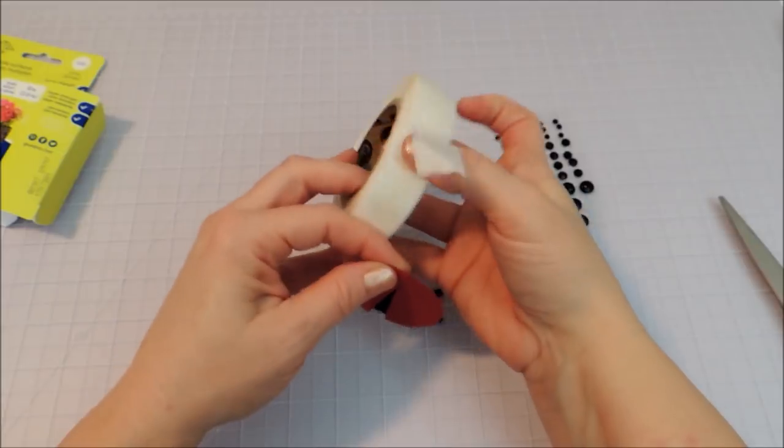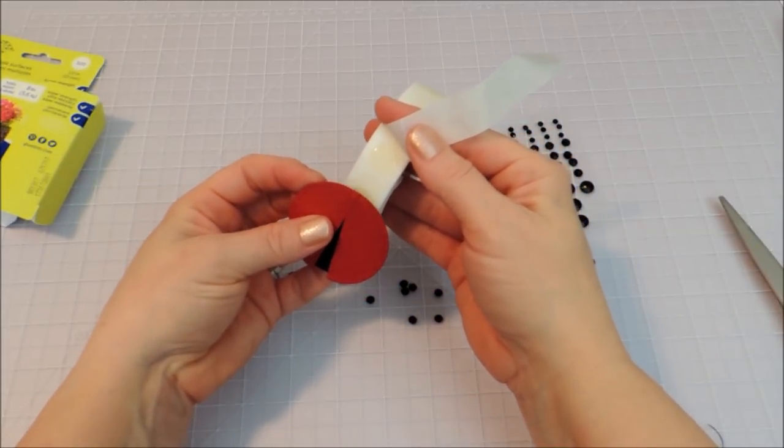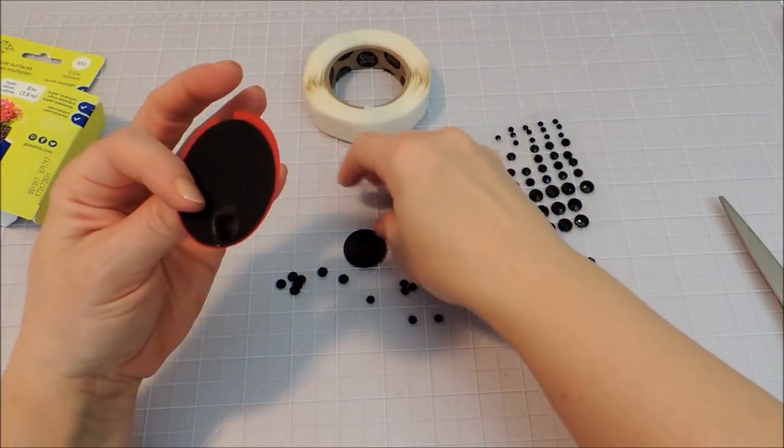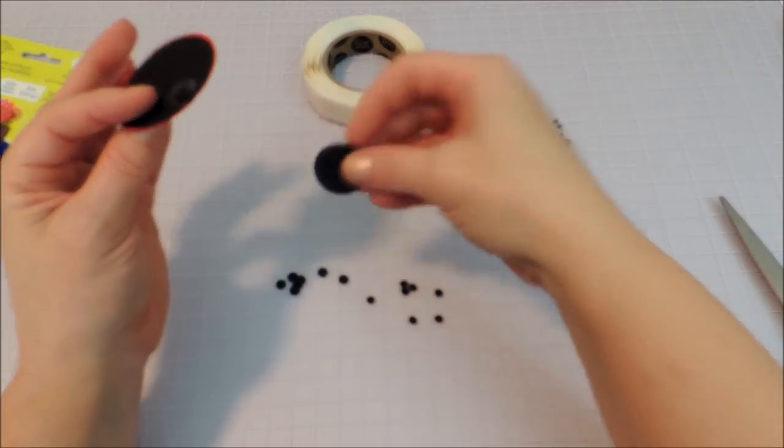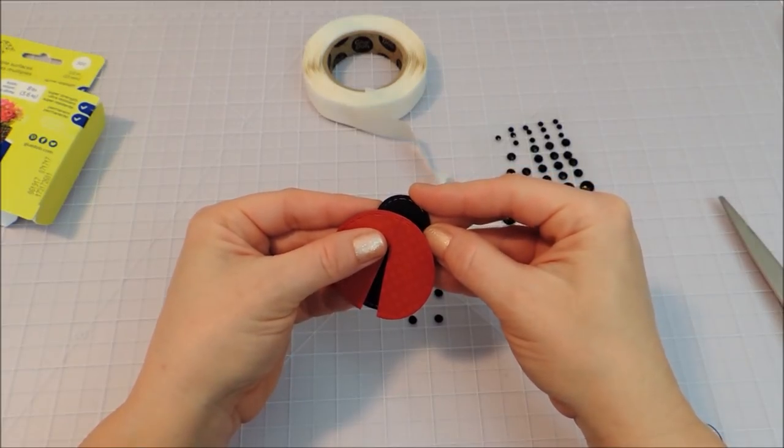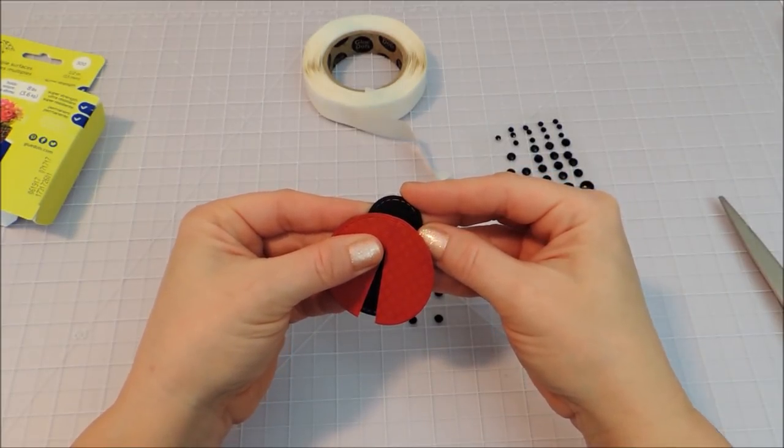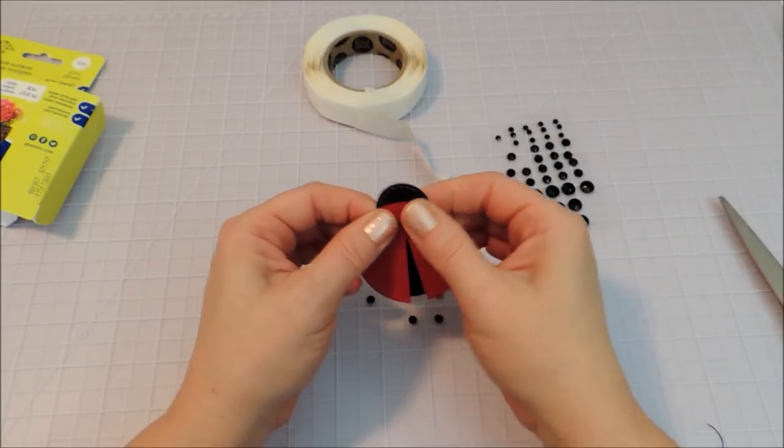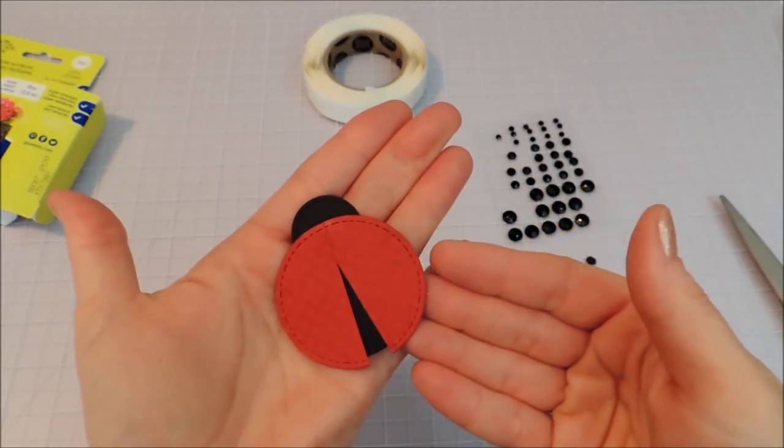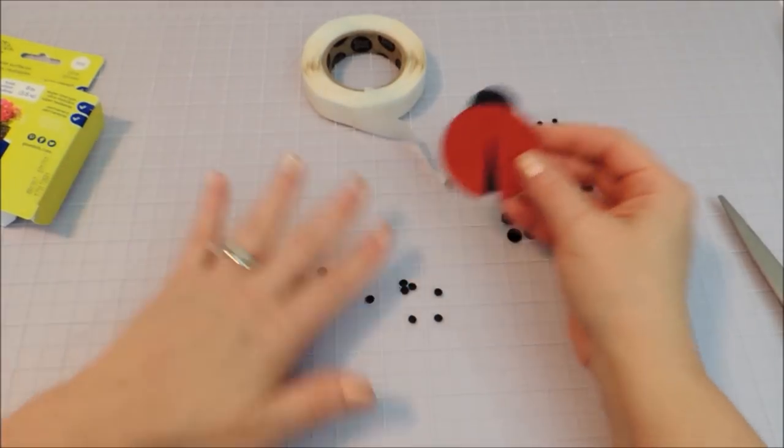And then another glue dot right at the top on the back. And then we can use that to put the head on behind there and just scoot it down so that you only see about half or maybe a little less. And that already looks like a ladybug. I think that's so cute.